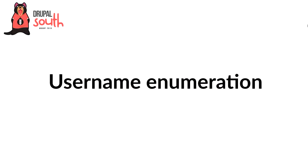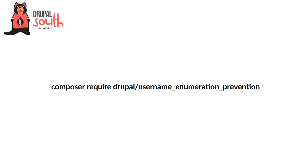The next one is username enumeration — being able to look at a Drupal site, probe it a little, and figure out all the usernames available on the site. This is actually a common problem with Drupal. The official message is that it's not going to be fixed — it's not a bug, it works as designed. There is a username enumeration prevention module that closes a lot of the loopholes around being able to pull usernames out of a Drupal site. There's no configuration you have to go through or ways to shoot yourself in the foot — it's just plug and play and does its job.